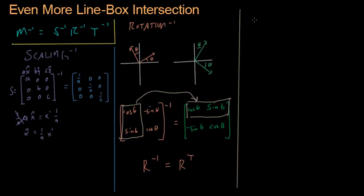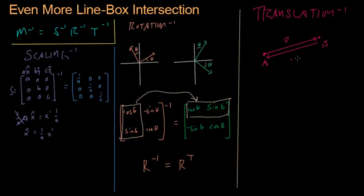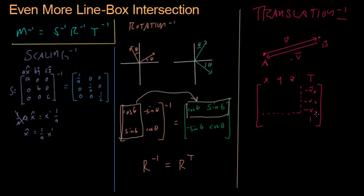Now for translation inverse — the easiest of the three. If you have point A and use translation vector v to get to point B, to go back the other way you just take negative v. In the matrix, where I had my translation column at the end with x, y, z basis vectors, I simply negate the translation: negative vx, negative vy, negative vz.